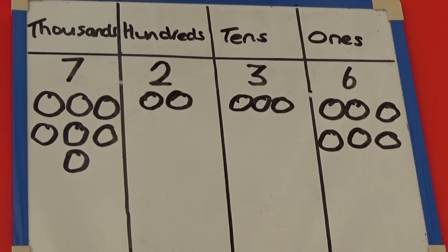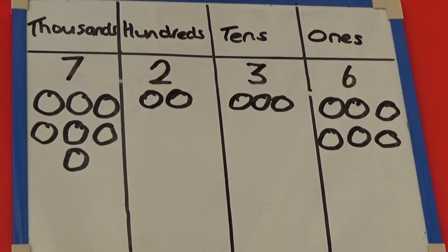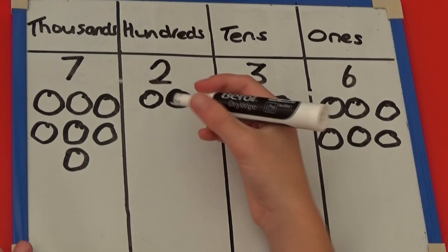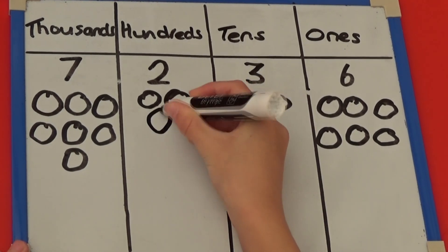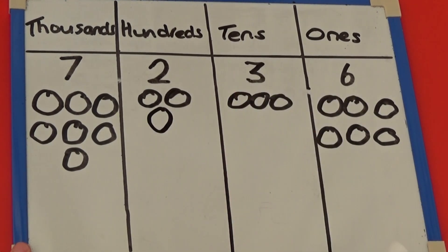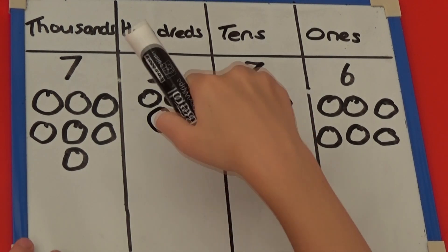We can also draw a picture to help us understand this. I have drawn out the counters showing the number 7,236. To add 100, I need to draw another 100 counter, which makes my number 7,336.